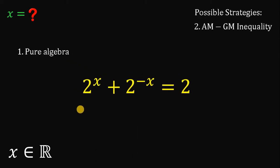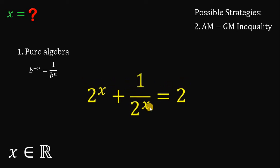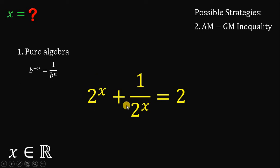Take note that b raised to negative n is equivalent to 1 over b raised to the power of n. Therefore, 2 raised to negative x can be written as 1 over 2 raised to x. Now we have two terms that are common — we have 2 raised to x and 2 raised to x — so let's replace this with another variable and call it a. Therefore, all instances of 2 raised to x can be replaced with a.